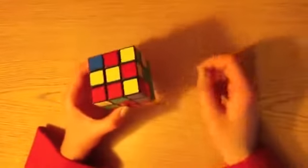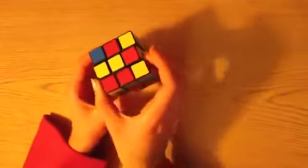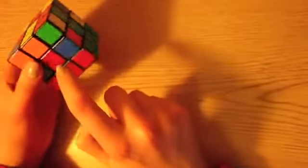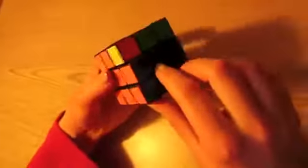The next step is to solve the middle layer. This can be done using either of two algorithms. Here, the red and green cube needs to be rotated to the left. Now we have solved the middle layer.